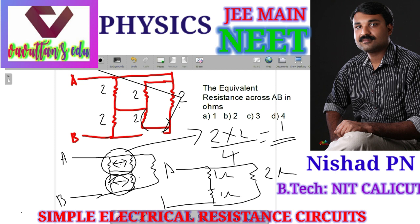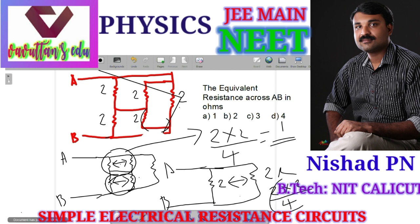This is the terminal A and B. The equivalent resistance whose value is 2 ohm. Since 1 and 1 are in series, now this 2 ohm and this 2 ohm are in parallel. That is 2 into 2 divided by 2 plus 2, equal to 4 by 4, that is equal to 1. So correct option is Option A — the equivalent resistance between terminal A and B is 1 ohm.